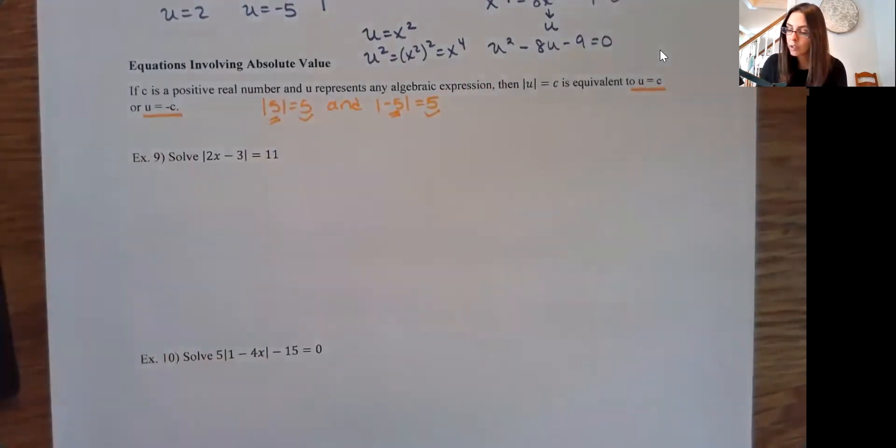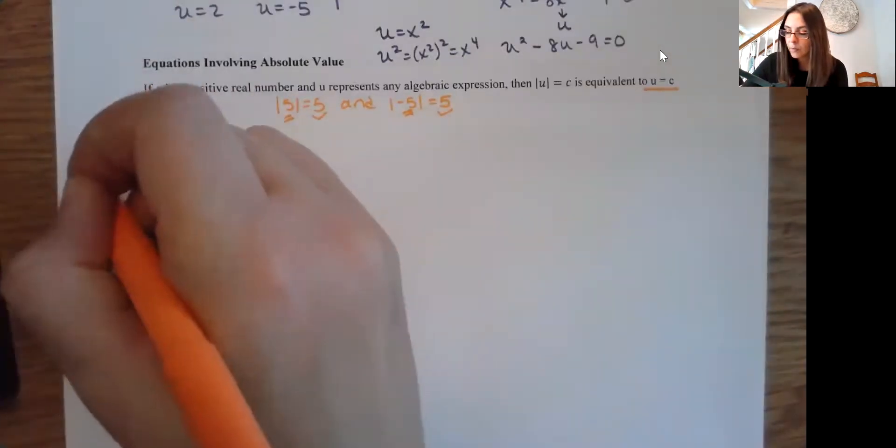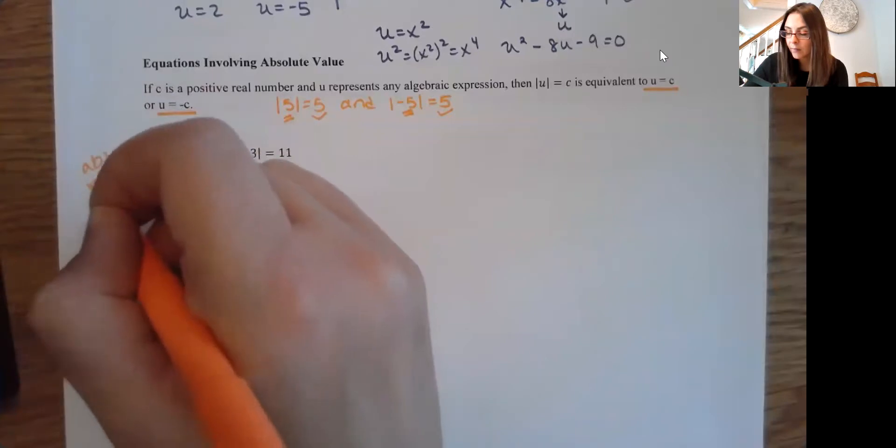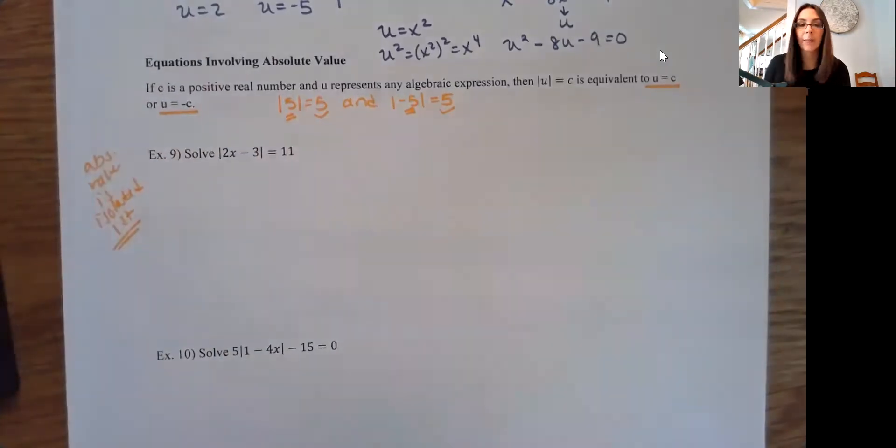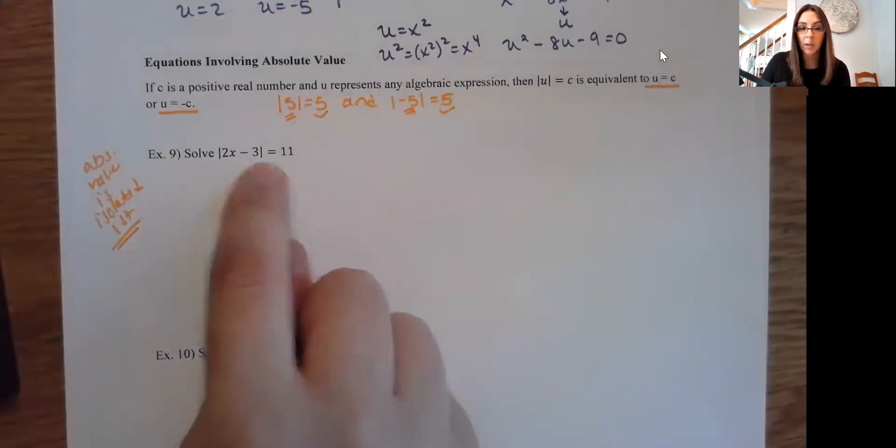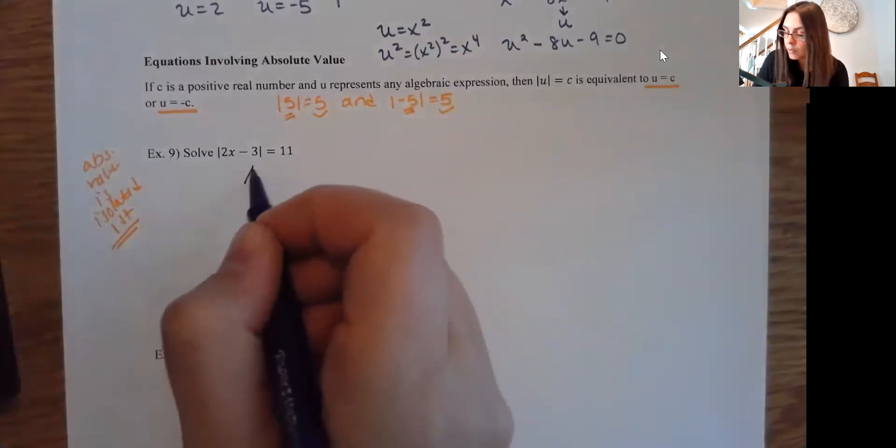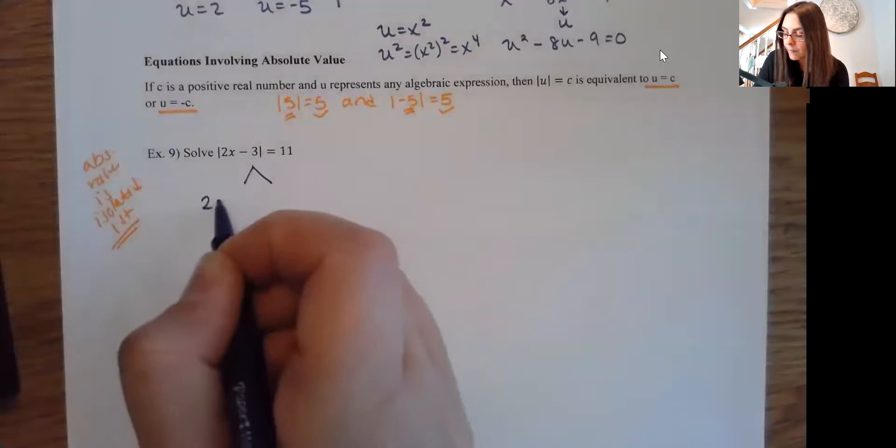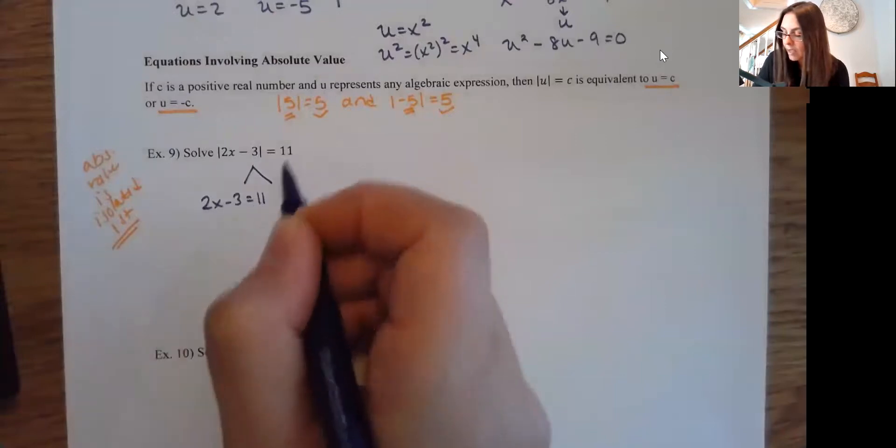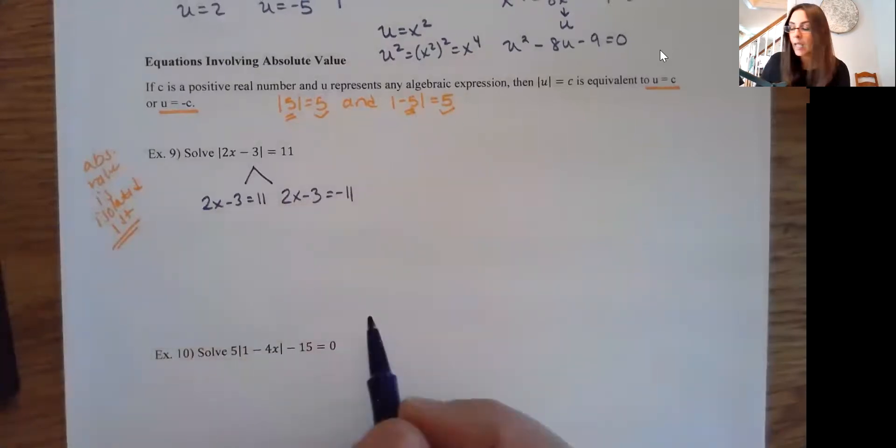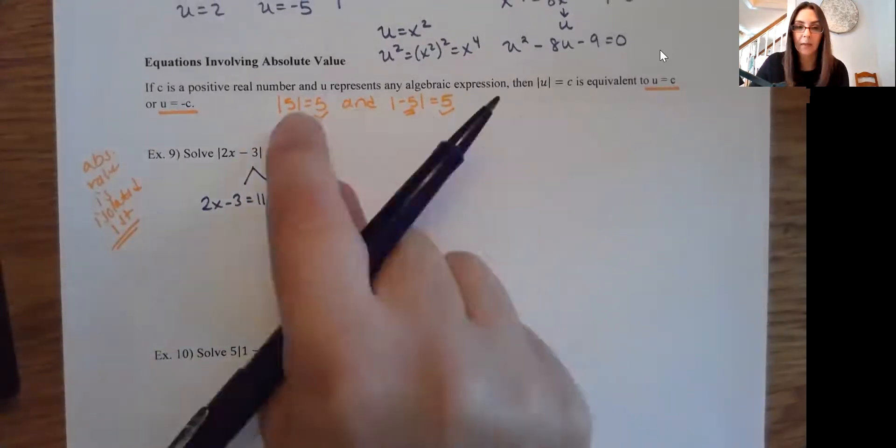Now, to do this, you do need to make sure that the absolute value is isolated first. So before we start, you do want to make sure your absolute value is isolated. This one is, so we can jump right in here. So I'm going to have two versions. So the inside stays the same, and then I set equal to 11, and then I do the inside the same, and then I set equal to negative 11. And that's going to give me my two possible answers here.